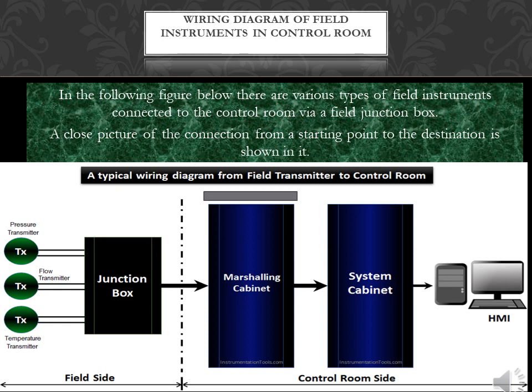The wiring diagram of field instruments to the control room is illustrated below. Various types of field instruments are shown connected to the control room via a field junction box. A detailed picture of the connection from the starting point to the destination is shown in the figure.